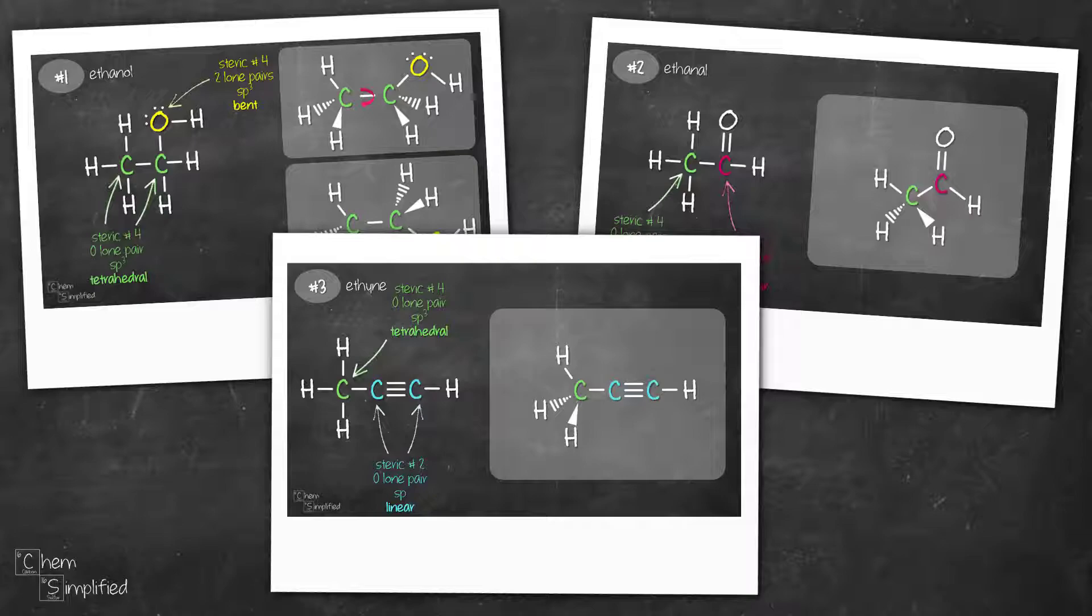We can use either hybridization or steric number to determine the geometry for each of the atoms. Let me know if you need a video on how to determine hybridization. If you need a refresher on figuring out the steric number, refer to the VSEPR geometry video. I'll link it in the description box and at the end of this video.